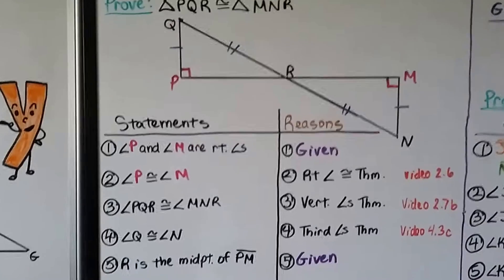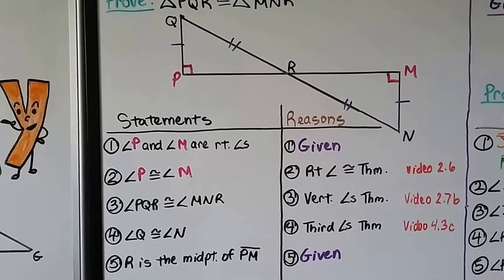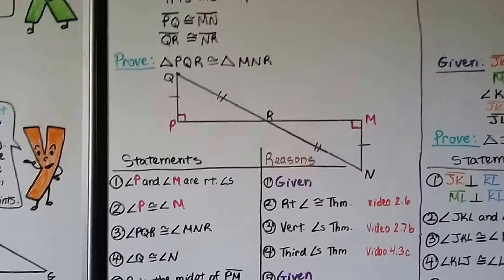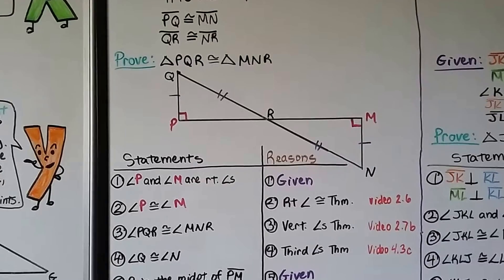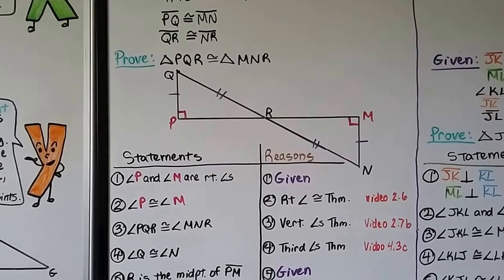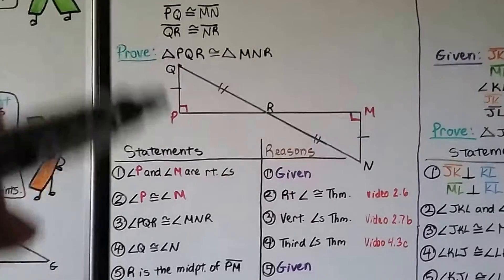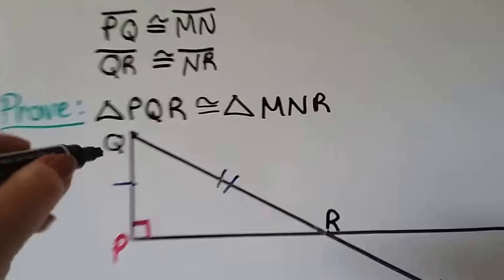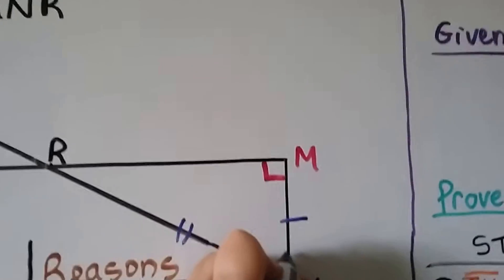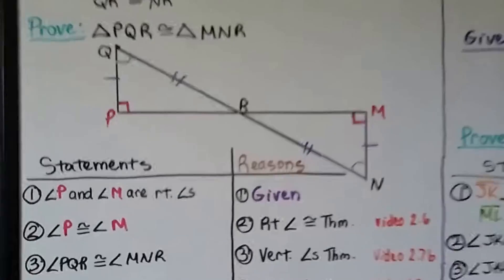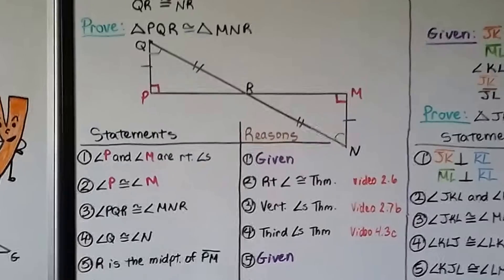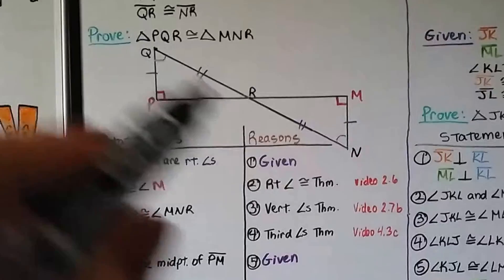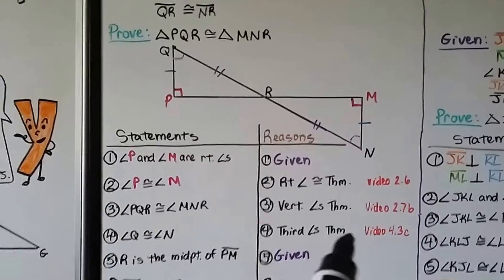Statement 1: Angle P and angle M are right angles — given. Statement 2: Angle P is congruent to angle M — right angle congruence theorem. Statement 3: Angle PQR is congruent to angle MNR — we can mark these up in our diagram. Statement 4: Angle Q is congruent to angle N — third angles theorem.